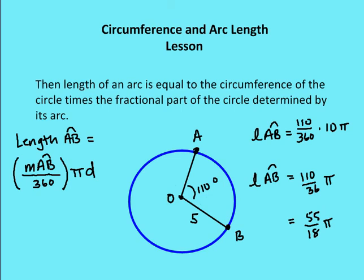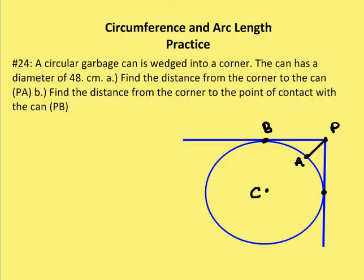That's it for the lesson — again, it should have been review. We have two practice problems. The first one: a circular garbage can is wedged into a corner. The can has a diameter of 48 centimeters. We need to find the distance from the corner to the can — first, find PA, and then find the distance from the corner to the point of contact with the can, which is PB.